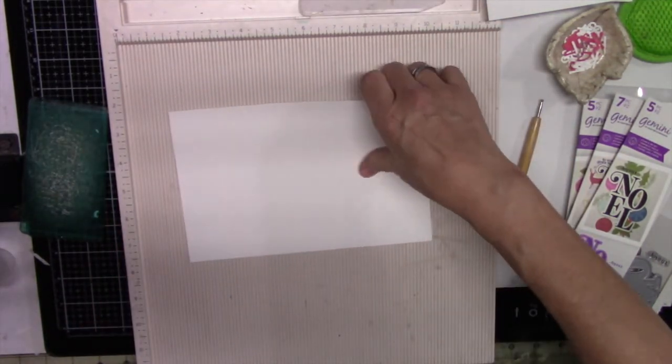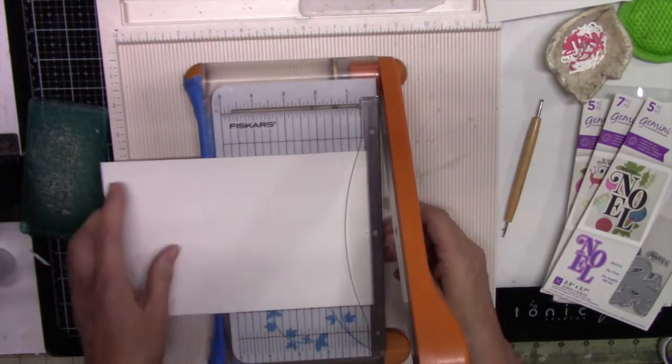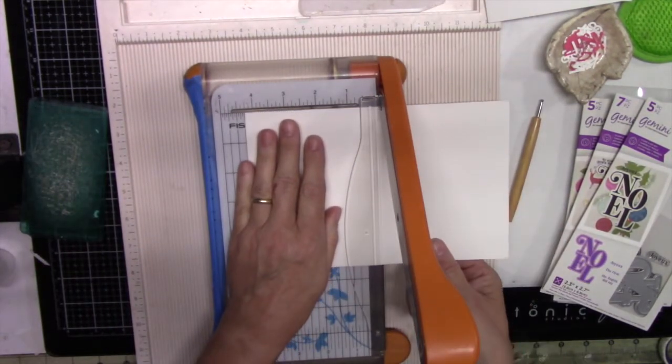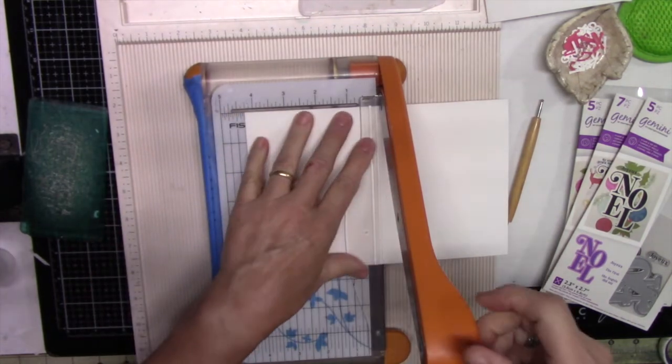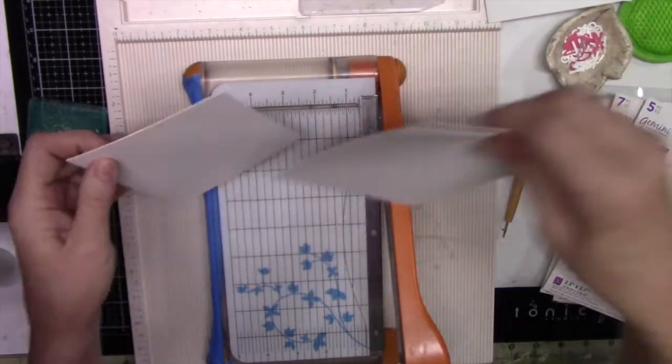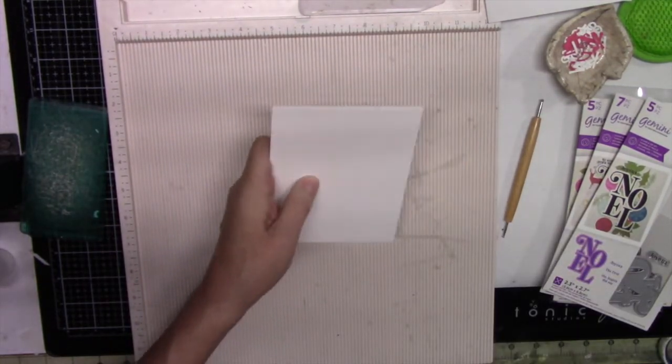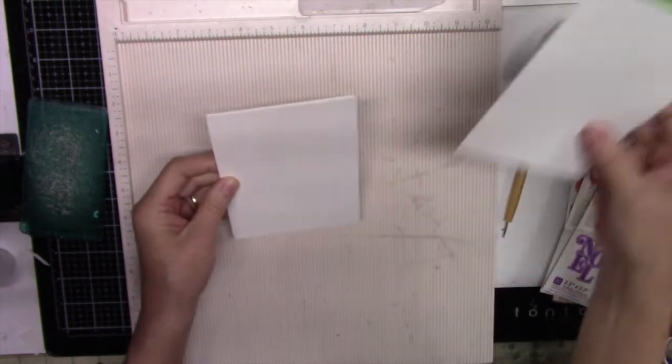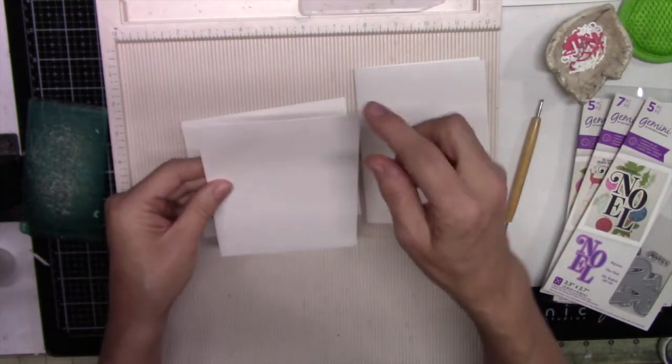Then I take my small little guillotine and I measure four and a quarter, so I just align it up with four and a quarter and then slice. And there I have a perfect top folding card which I could also use it this way or top. I like a top folding, so I like that.